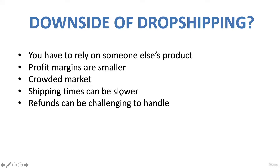Shipping times can be slower depending on where your third-party vendor is located. In this course we'll be doing a lot of dropshipping from China, because products there are very cheap and you can ship to pretty much anywhere in the world. However, if you're not in China it can take two to three weeks for products to arrive — I live in the US so that's the case for me. It can be a bit challenging, but I'll show you ways to overcome that. Lastly, refunds can be challenging to handle depending on what you sell, since you don't have a fulfillment center. We'll address that later — there are easy ways to handle it.